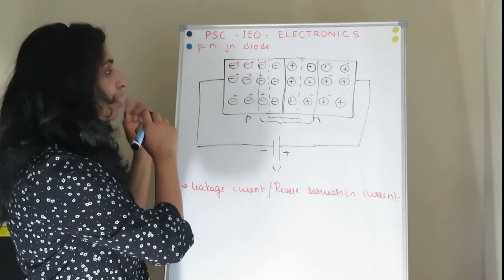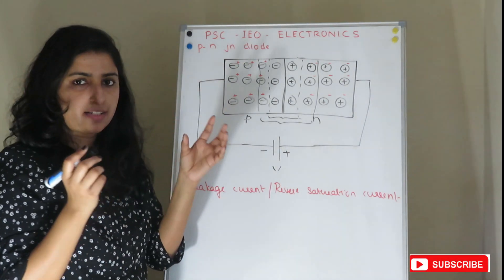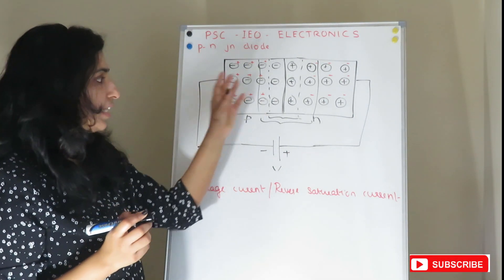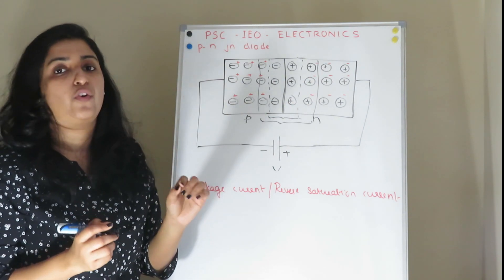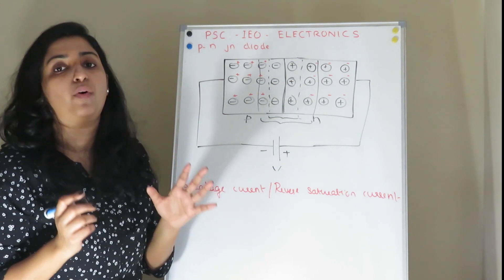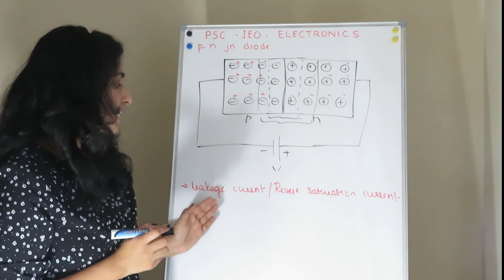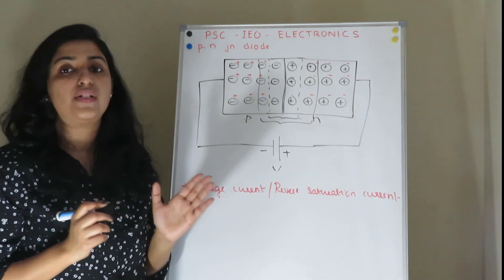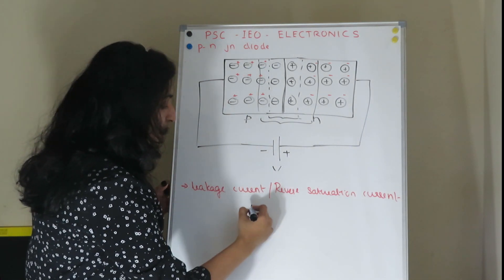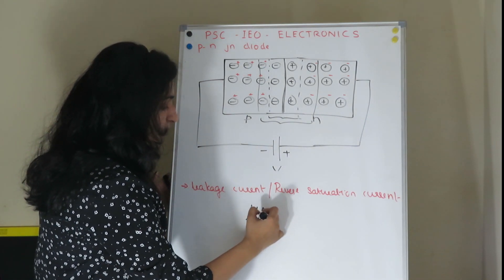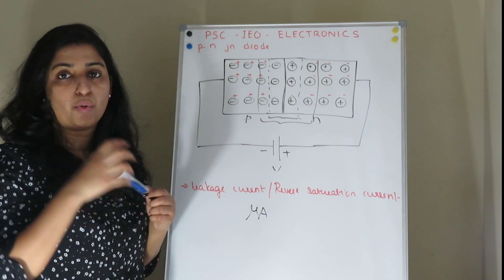There is a drift of minority carriers. This drift results in a negligible amount of current flow — this is the leakage current or reverse saturation current. It is measured in micro-amperes and is negligible.